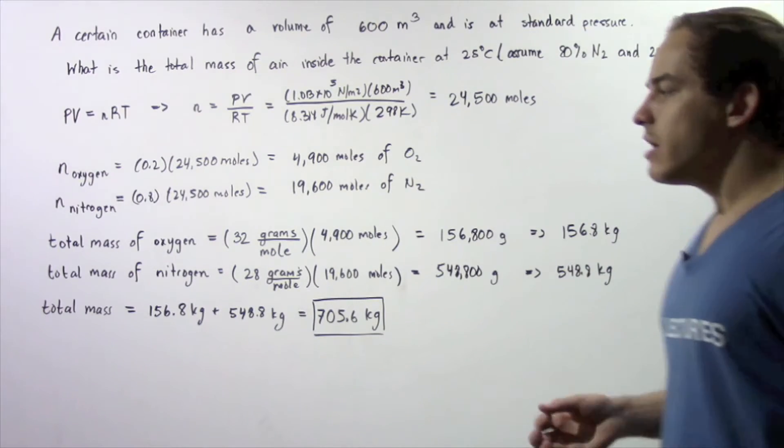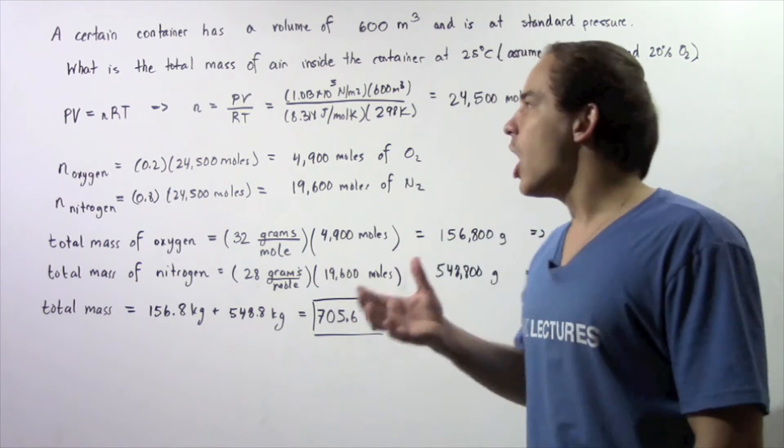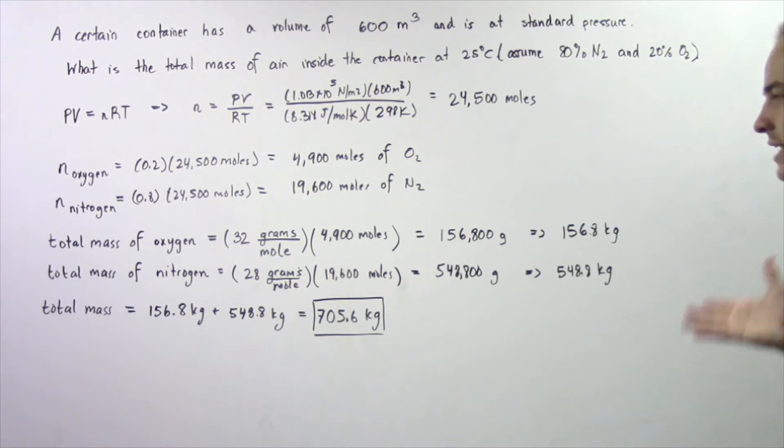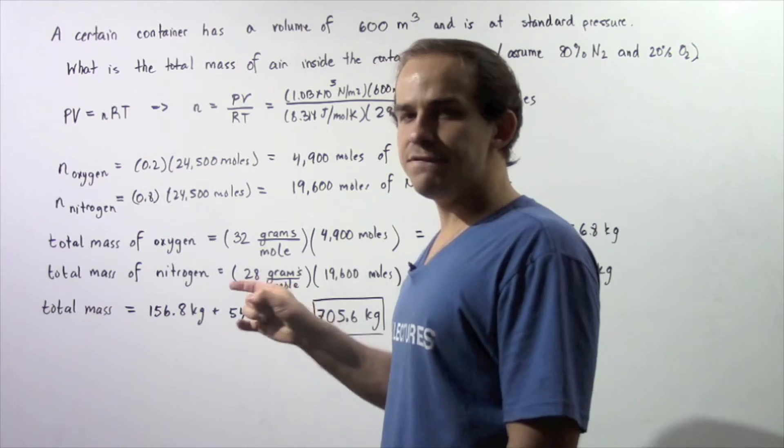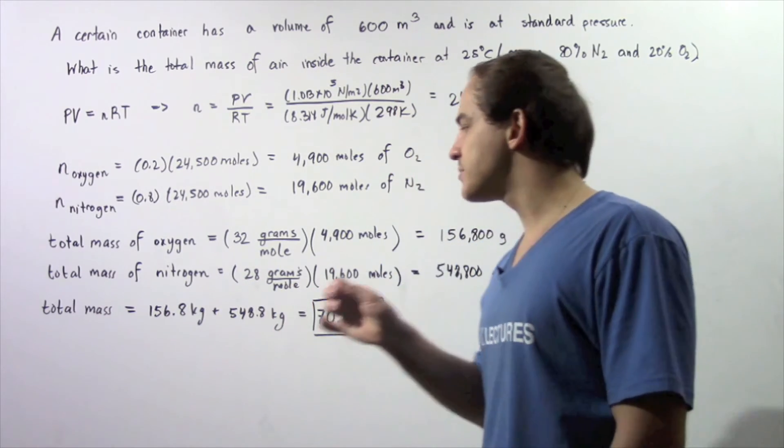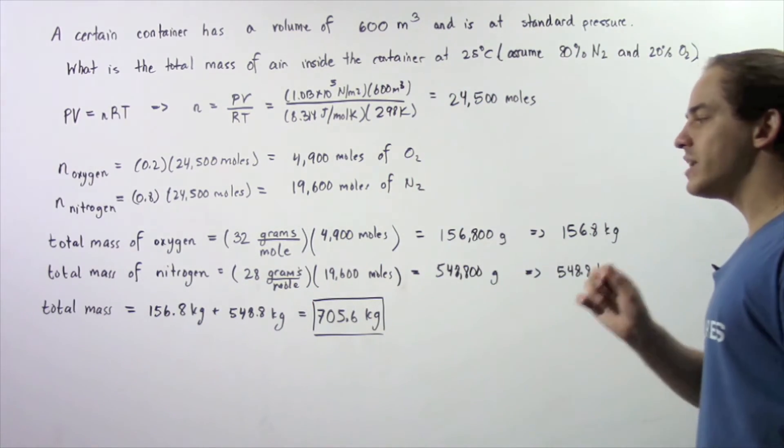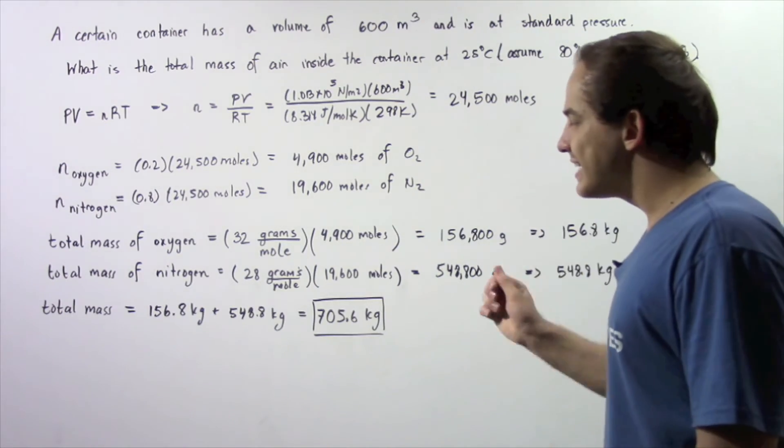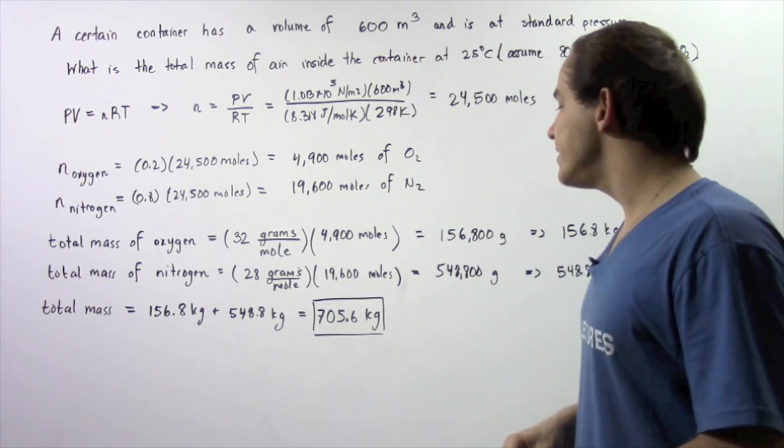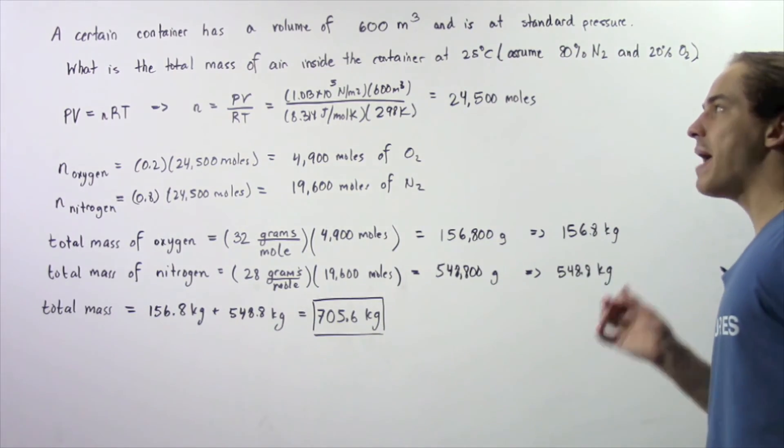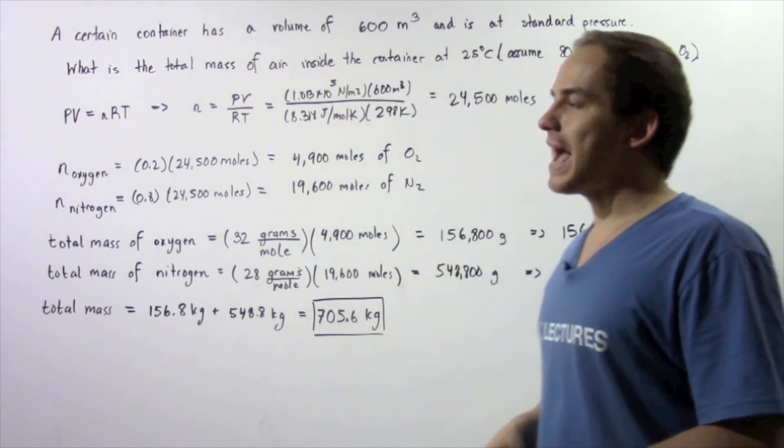So to calculate the total mass of our air inside the container, we simply add up these two quantities. So 156.8 kilograms plus 548.8 kilograms gives us 705.6 kilograms, the mass of air inside our container.